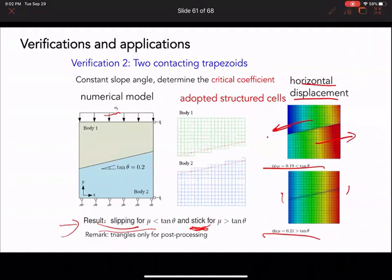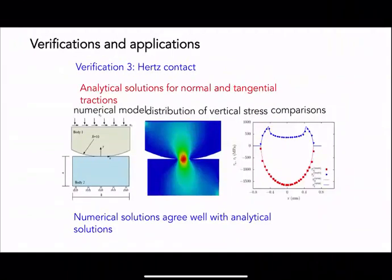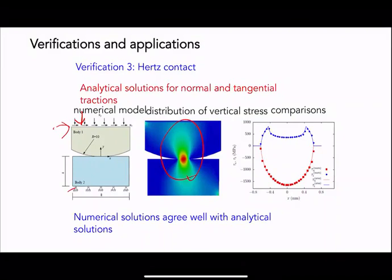Another classical verification problem applies relative displacement on top while fixing the bottom, and we check whether we recover the stress field that has an analytical solution. The analytical solution is shown as a dashed red line and solid blue line, and the points are the material calculations. These simulations match very well for the contact MPM level set problem.